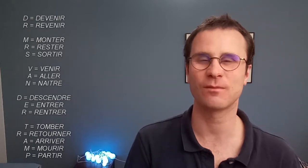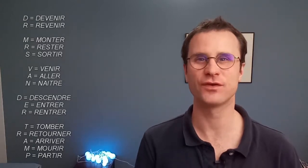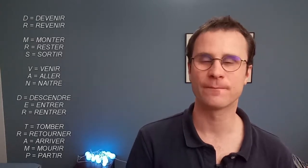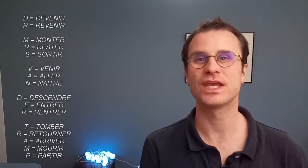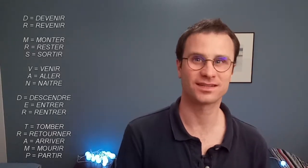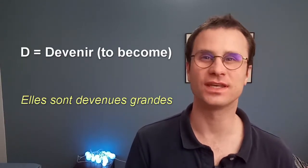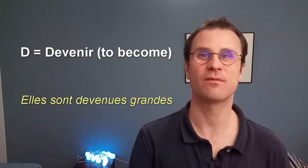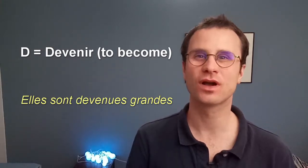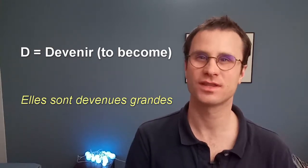The fourth step is a very important step — this is the Dr. and Mrs. Vandertramp list. Each letter of 'Docteur and Mrs. Van der Tramp' is the first letter of a verb that uses the auxiliary être. For D: devenir — to become. Example: Elles sont devenues grandes — they grew up.